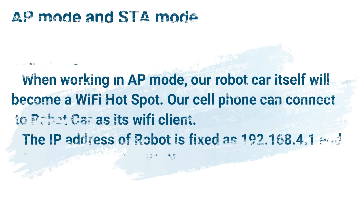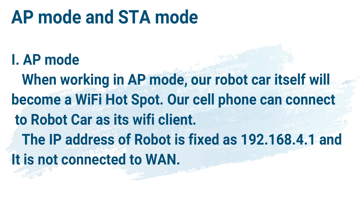There are two Wi-Fi modes: AP mode and STA mode. In AP mode, the robot car itself becomes a Wi-Fi hotspot and your cell phone connects to it as a Wi-Fi client. The IP address of the robot is fixed as 192.168.4.1 and it is not connected to WAN.